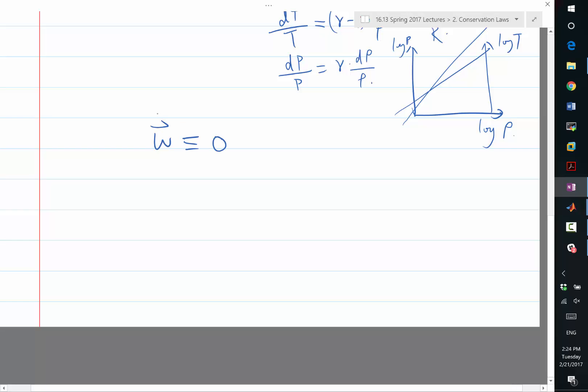For isotropic inviscid flows, omega equal to zero means that we can represent the velocity as the gradient of some potential function phi, because the curl of that velocity is equal to zero.